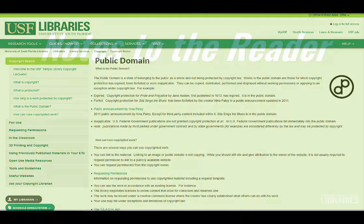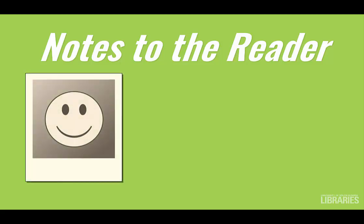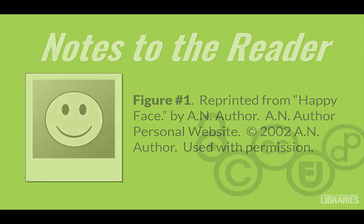A note about notes to the reader. When you use material with permissions and under an open use license, your citation should include this information. For example, when using a figure from a published article, a note under the figure, or in a footnote on the same page, should include or refer to the full citation of the original work, state the copyright owner of the material, and that your use is with permissions or in line with an open use license.